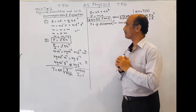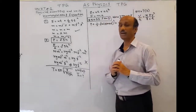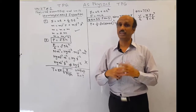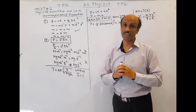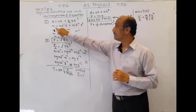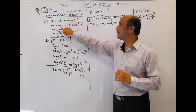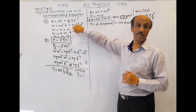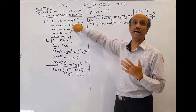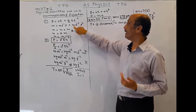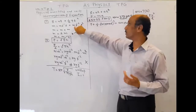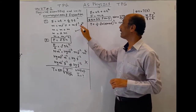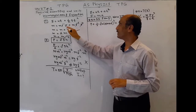Let me solve two examples. The first is x = ut + ½gt², where x is the distance, u is the speed, t is the time, and g is the gravitational acceleration. The unit of distance is meter, the unit of speed is meter per second, and time is seconds. We will ignore the values of constants because we are only concerned with the units. The value of g is ms⁻² and we have s².